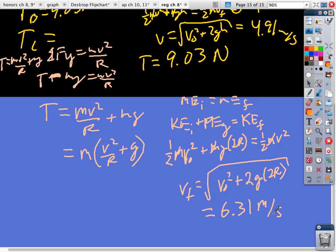and I do m, which is 0.3, times 6.31 squared, divided by 0.8 plus 9.8. And then I get 17.9 newtons.